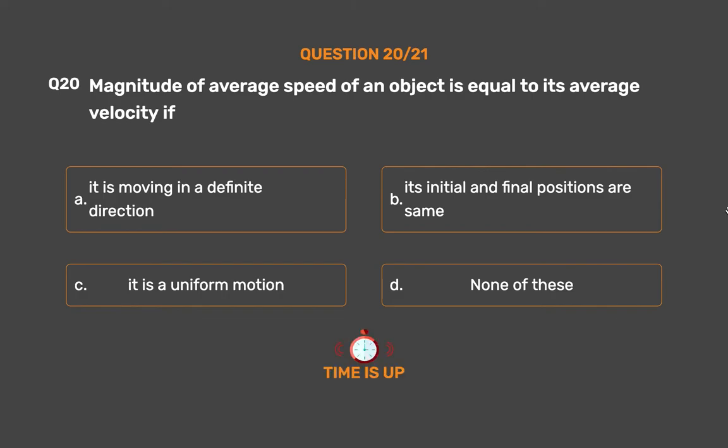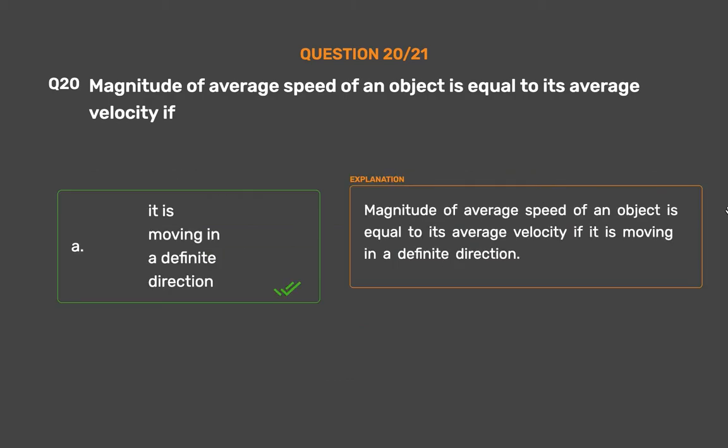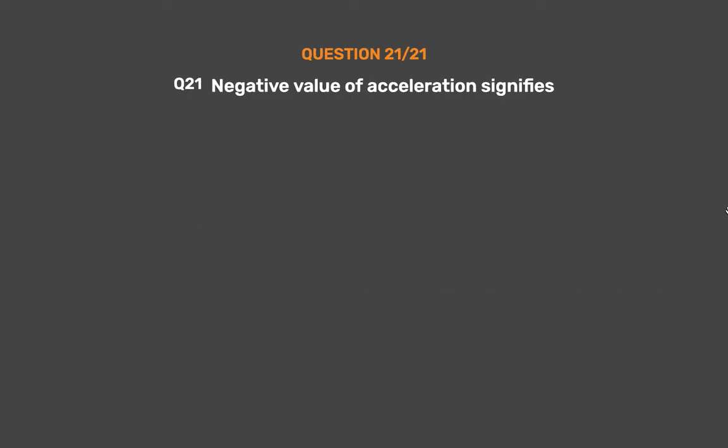The correct answer is Option A: It is moving in a definite direction. The magnitude of average speed of an object is equal to its average velocity if it is moving in a definite direction.